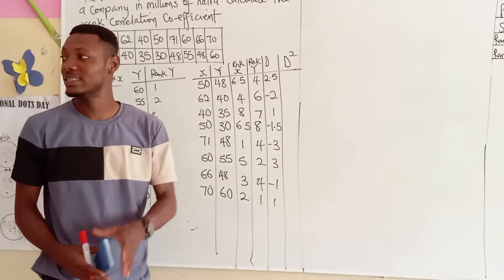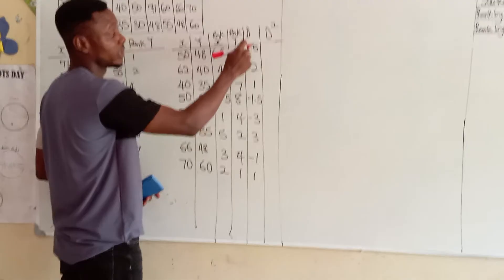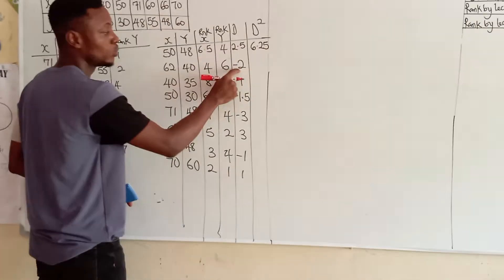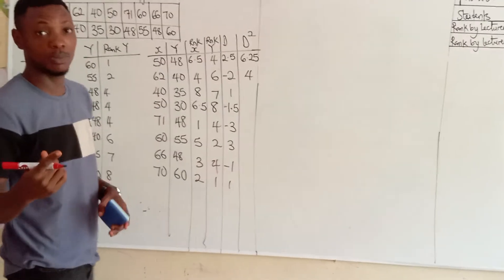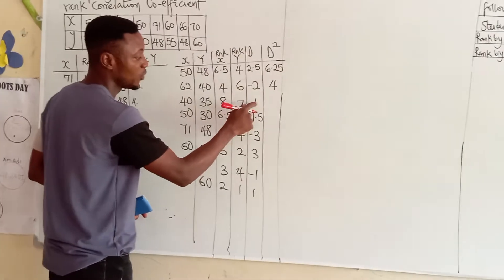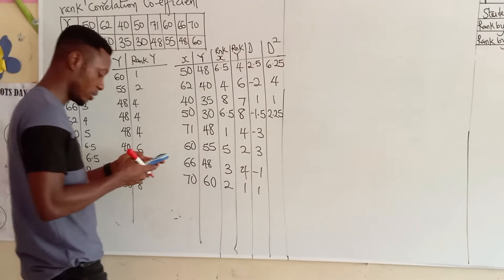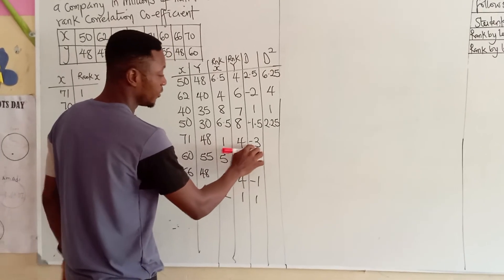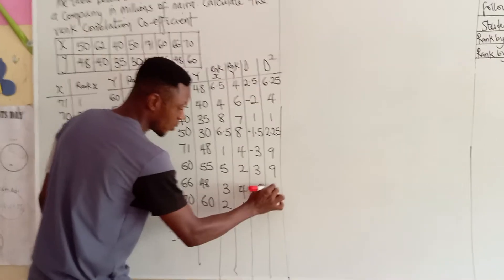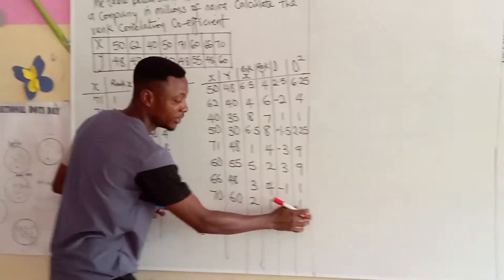Now, this square, difference square means multiply the difference by itself. Now, if we are multiplying the difference by itself, to square it, 2.5 square, which is 2.5 multiplied by 2.5 will give me 6.25. Minus 2, minus 2 is 4. A mathematics minus multiplied by minus will give us a positive sign. So, our negative sign is eliminated because of this square. 1 square is 1. 1.5 square is 2.25. Minus 3 square is 9. 3 square is 9. Minus 1 square is 1. 1 square is 1.